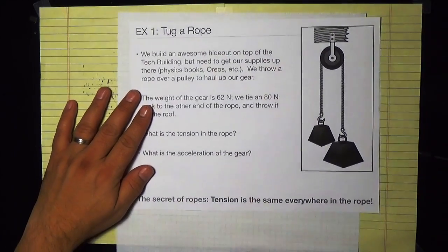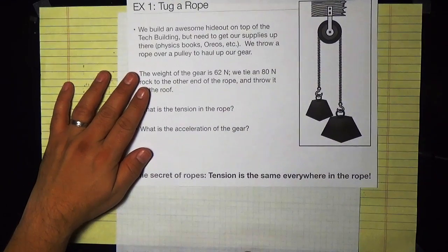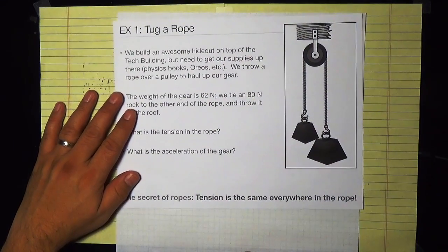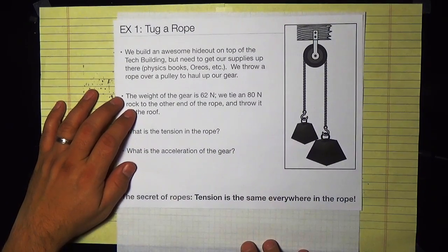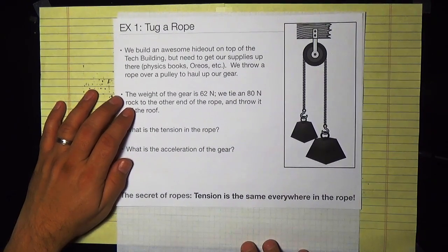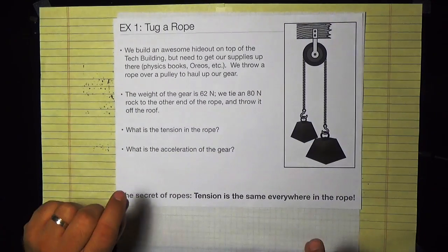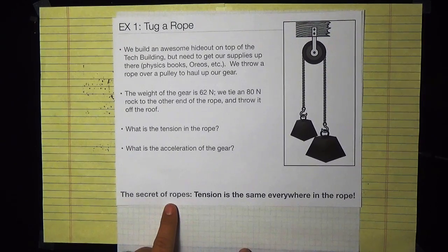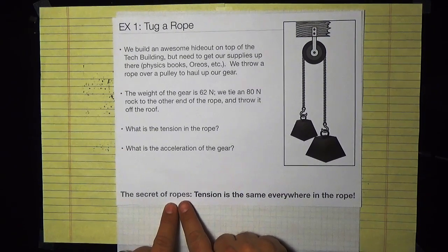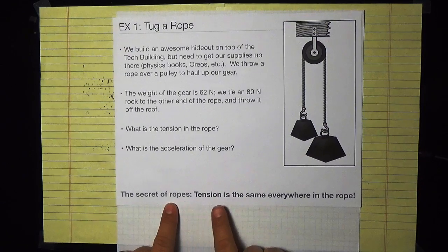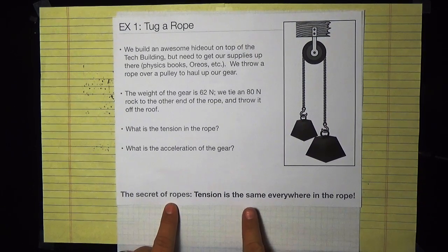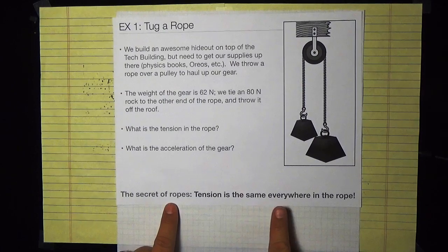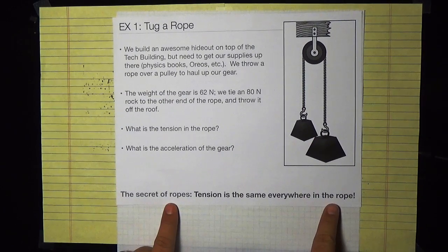A good approximation for most ropes is that they are inextensible — they don't stretch. So all forces along the rope are the same everywhere. We call these magic physics ropes because they don't stretch and don't change tension along the rope. The secret of solving rope problems is that tension has the same magnitude everywhere in the rope, so if you can find it anywhere, it's equivalent everywhere else.